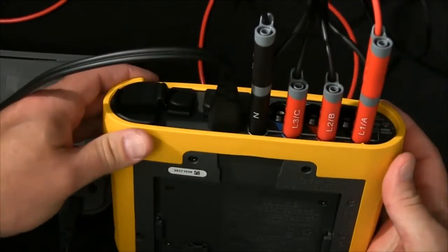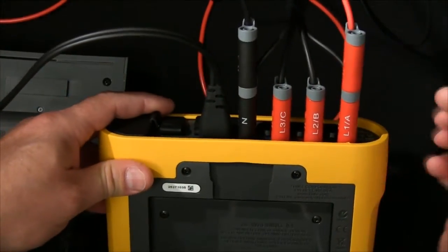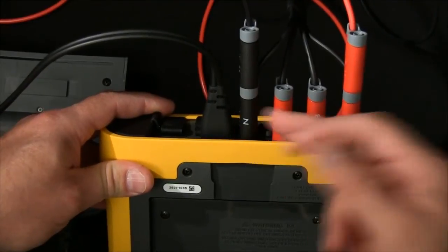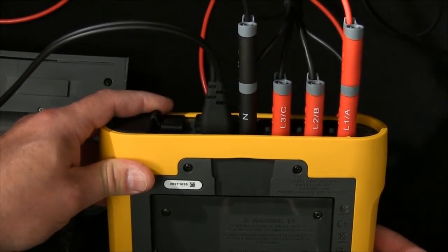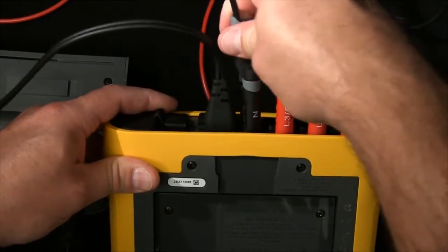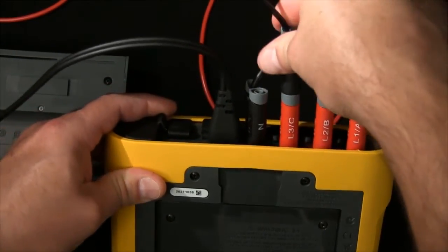So for a three-phase Y or single-phase, typically you would go from phase A to neutral. If you're on a three-phase delta that's under 500 volts, simply take the black wire and connect it to phase C.